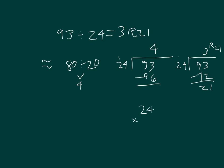24 times 3. 3 times 4 is 12. 2, we group a 1. 3 times 2 is 6. Plus 1 is 7. Plus 21. Does give us 93. So our answer does check.